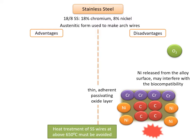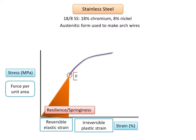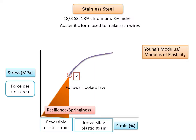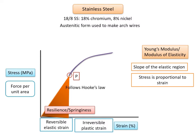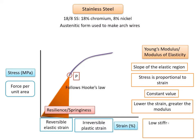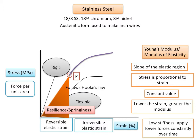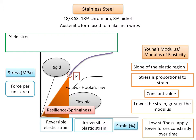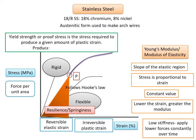Returning to the stress-strain graph: Young's modulus, or modulus of elasticity, is the slope of the elastic region, where stress is proportional to strain following Hooke's law. If the modulus of elasticity is lower, the material is more flexible; if higher, it is more rigid. Low stiffness means lower forces are applied constantly over time. Yield strength, or proof stress, is the stress required to produce a given amount of plastic strain and is measured at either 0.1% or 0.2% offset.